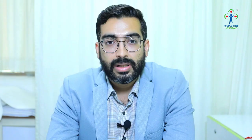Stroke is when there is a sudden occlusion of blood flow to the brain — it causes death of a part of the brain. It is also called, in simple language, a brain attack.